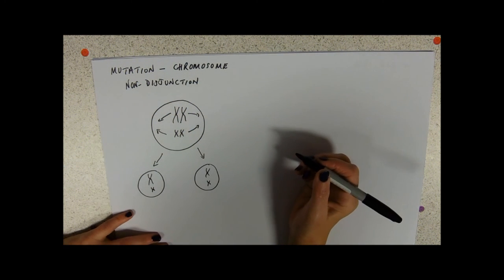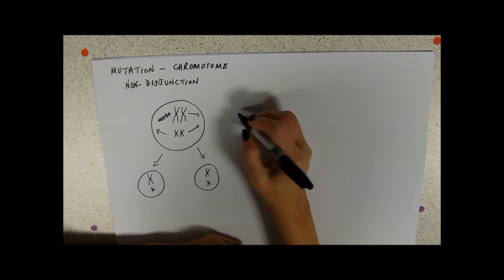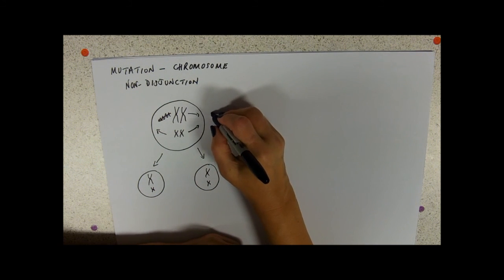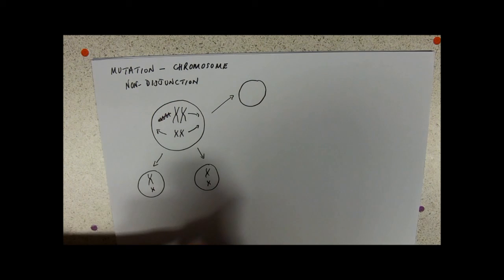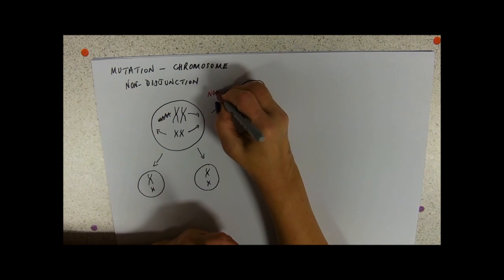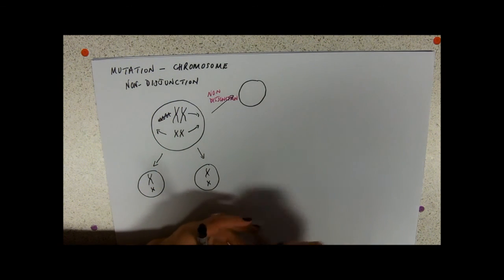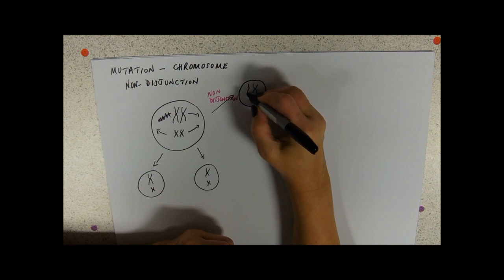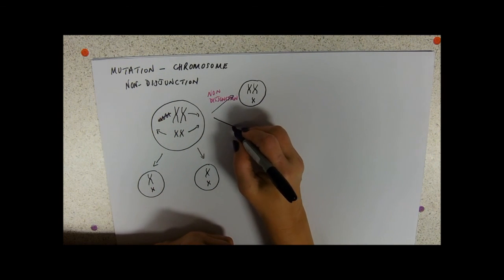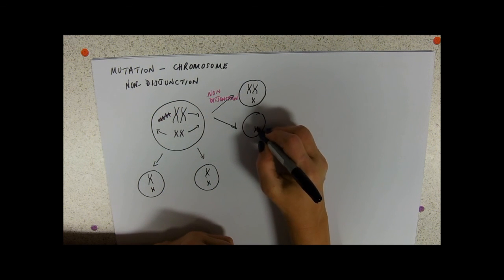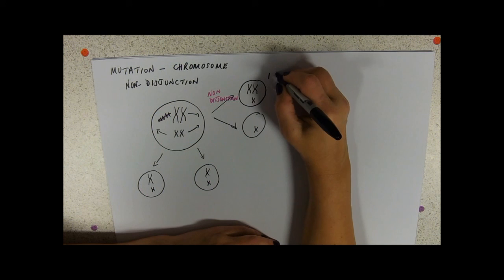Instead of going that way, one of these goes that way with its partner. So with non-disjunction, we end up with two chromosomes in one cell and none in the other cell. This is gain or loss of one chromosome.